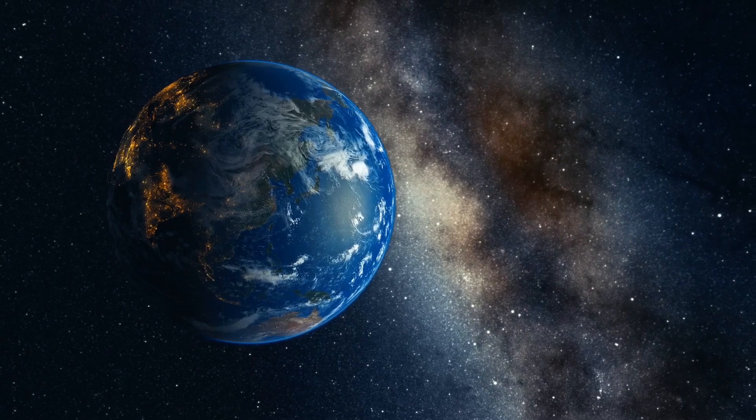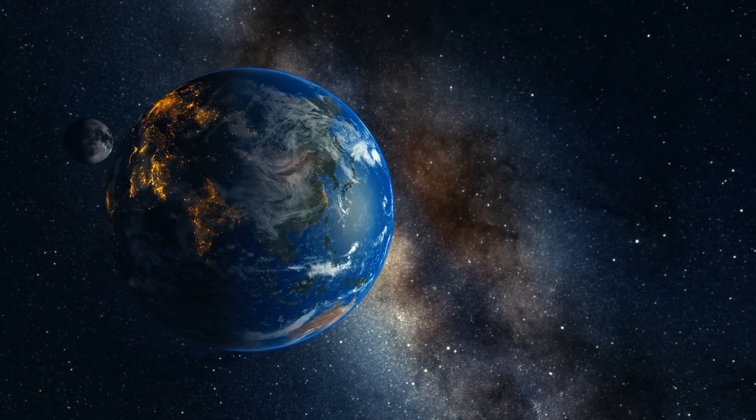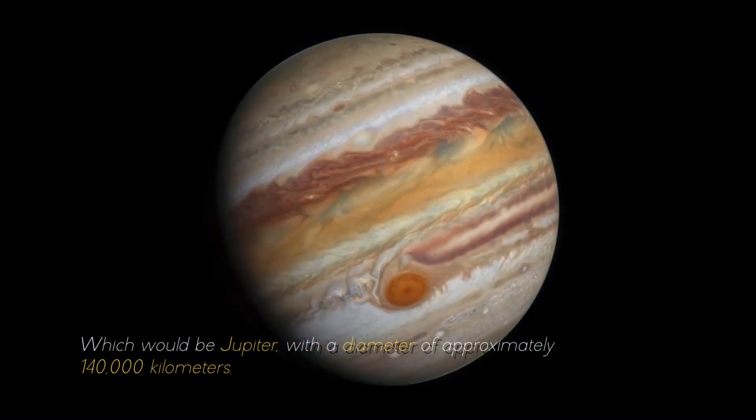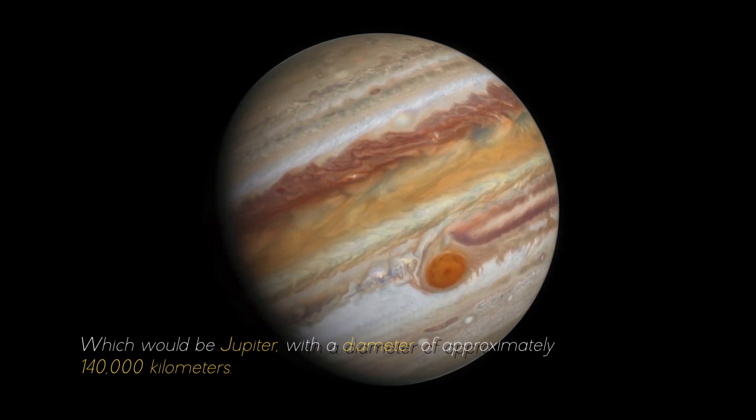If we compare it with the largest planet in our solar system, it would look like a ping-pong ball in front of a soccer ball, which would be Jupiter, with a diameter of approximately 400,000 kilometers.